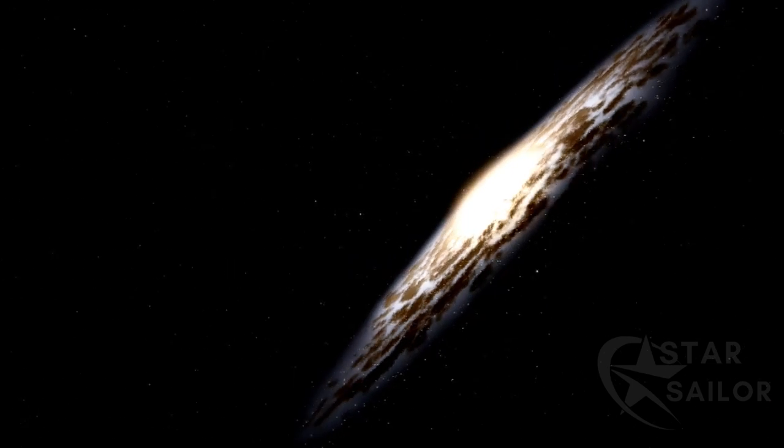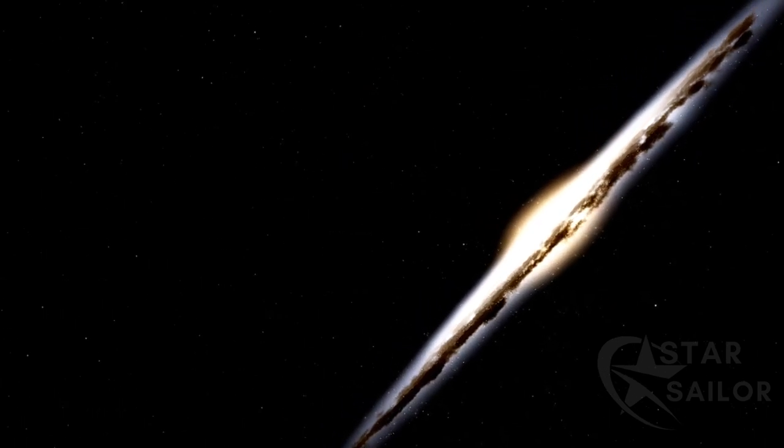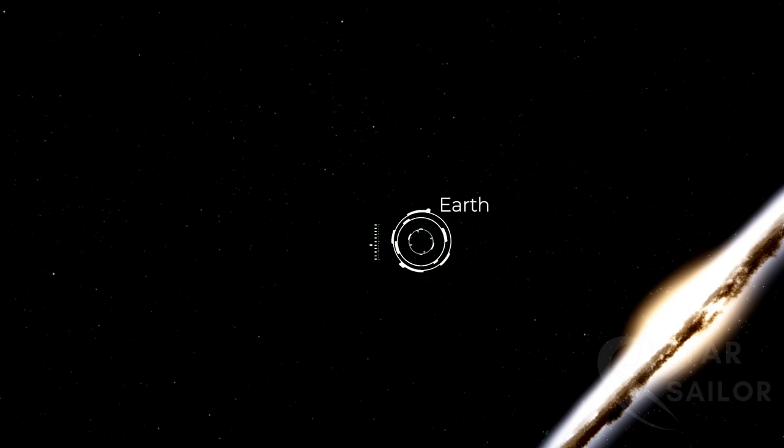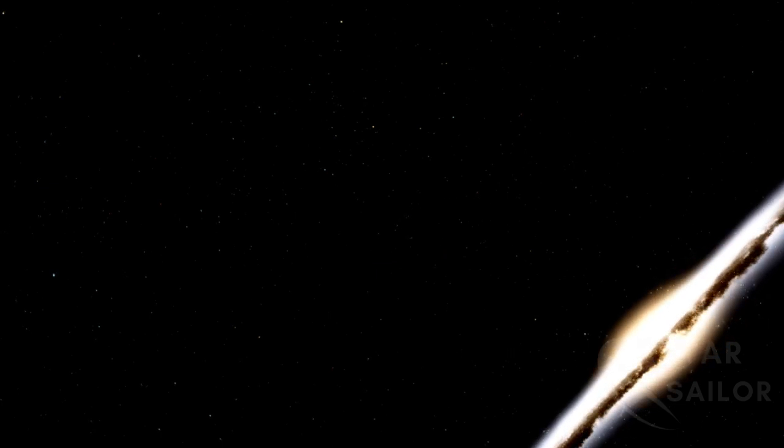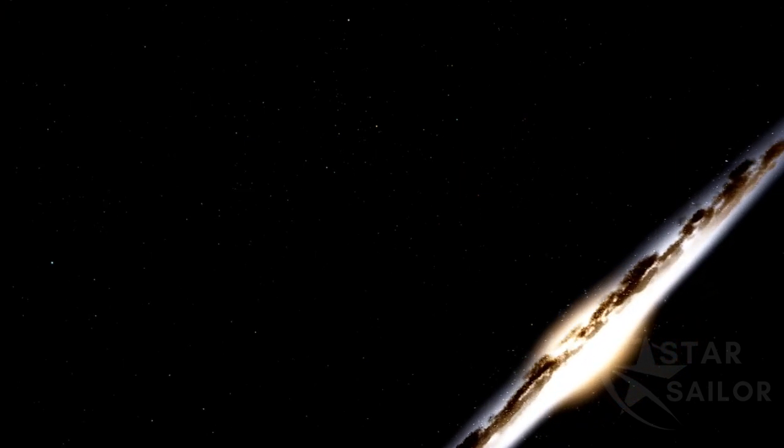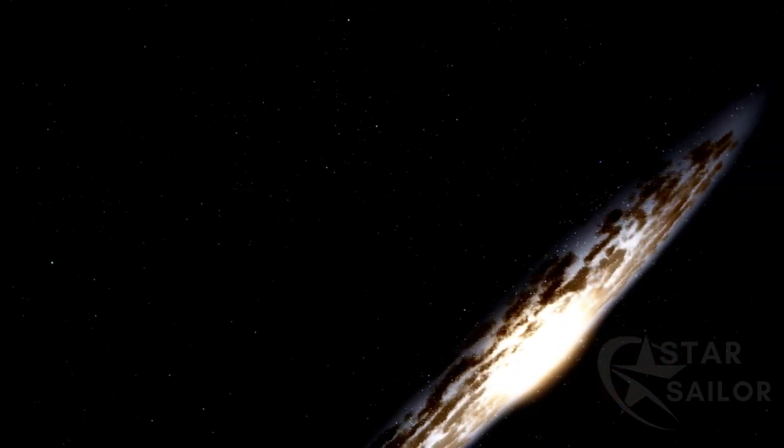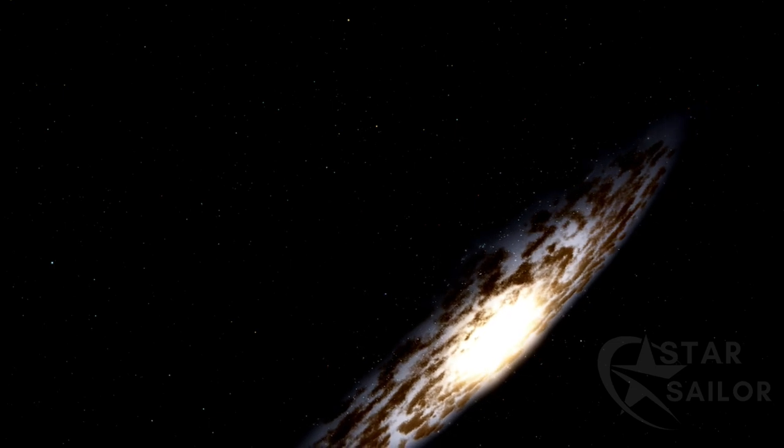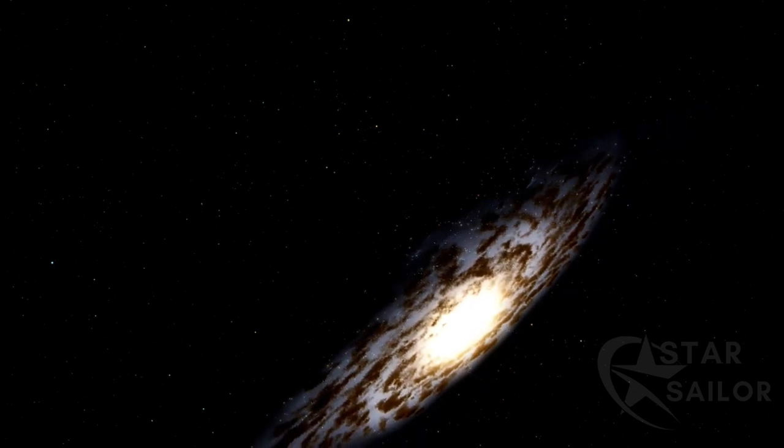The galaxy is so distant that any potential inhabitants there, pointing telescopes in the current direction of Earth, wouldn't be able to see us. Observing from here, it would still take 7 billion years for our planet to form from the accumulation of rocks around the sun. At that time, not even our sun had been born yet, highlighting the vast timescales involved in cosmic evolution.